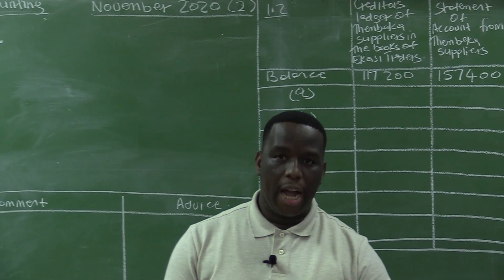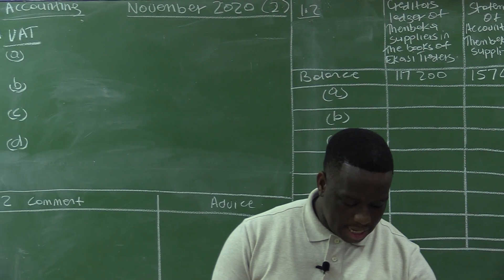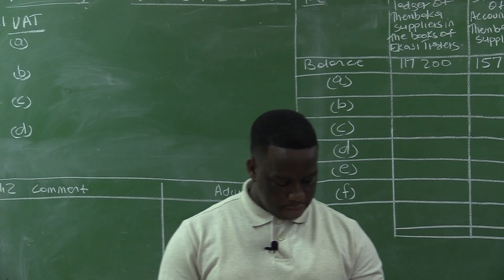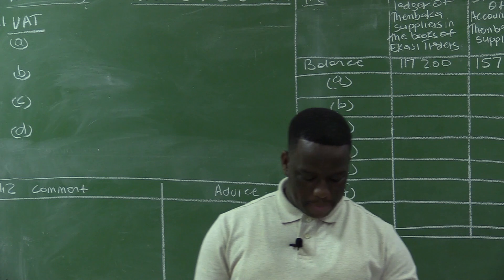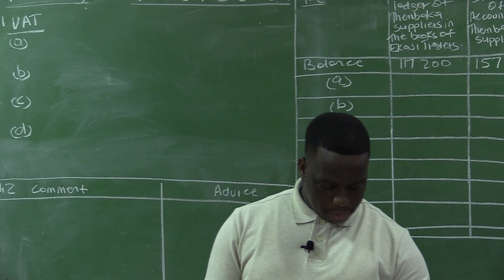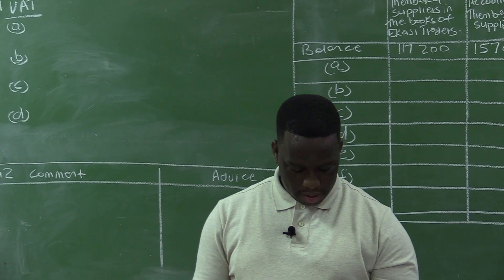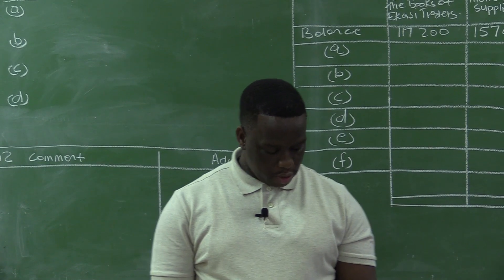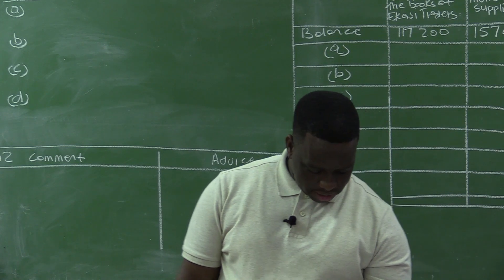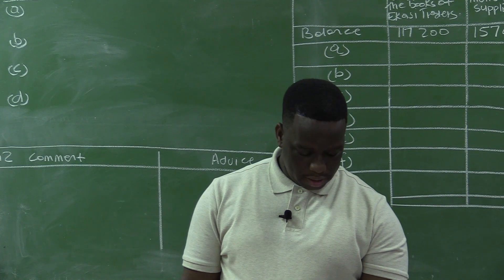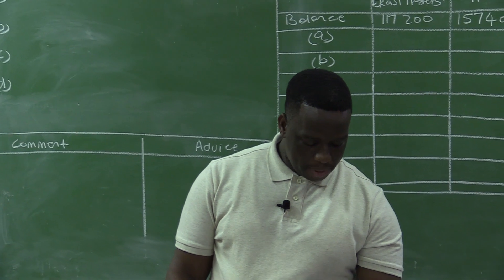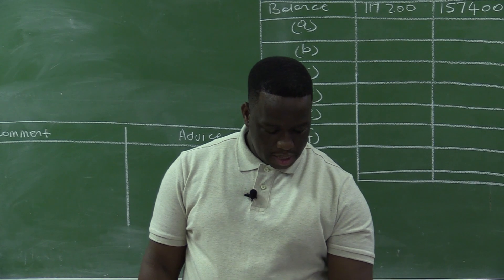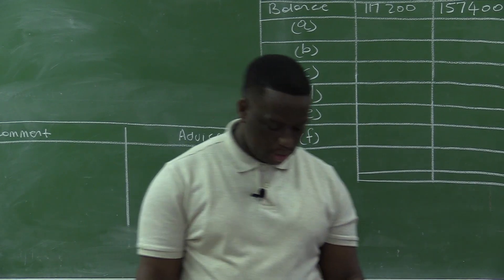Question 1.1.1 says: calculate the figures indicated by A to D in the table below. The table has columns for price excluding VAT, price including VAT, and the VAT amount. For the first transaction, item A, we are given both the price excluding VAT and the price including VAT, and our task is to calculate the VAT amount.